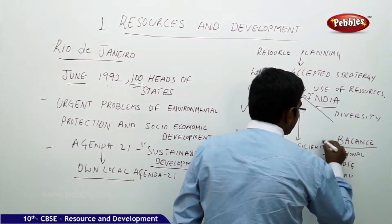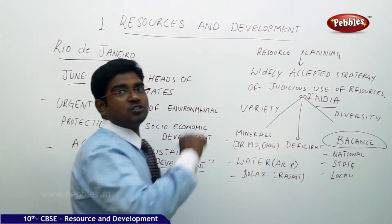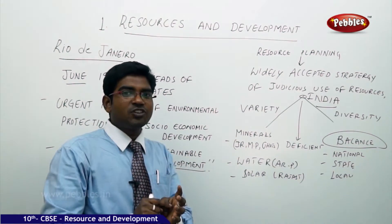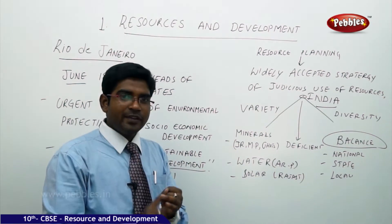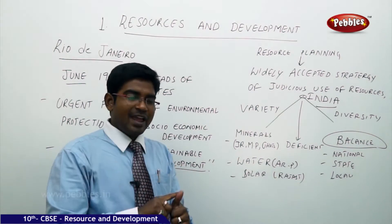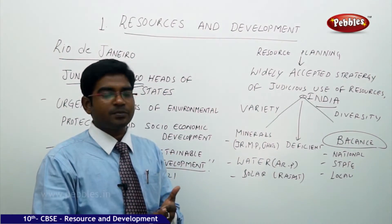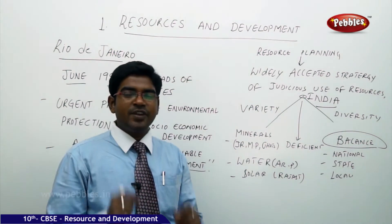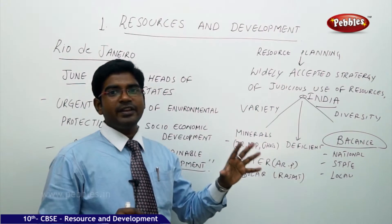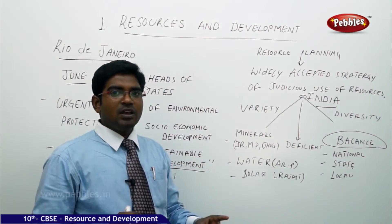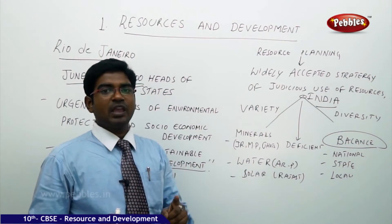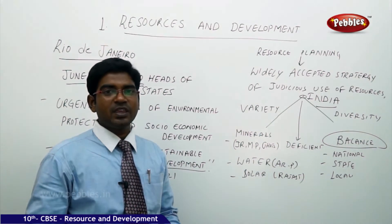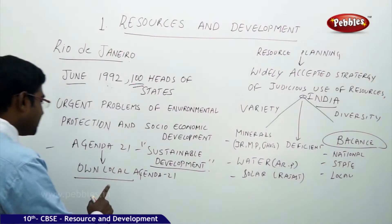That is what resource planning is. Resource planning has to be done by collaborating national interest, state interest, and local interest, and also to fulfill national needs, state needs, and local needs. Resources have to be planned very well to fulfill the needs of the nation, the state, and the local requirements of a particular area.